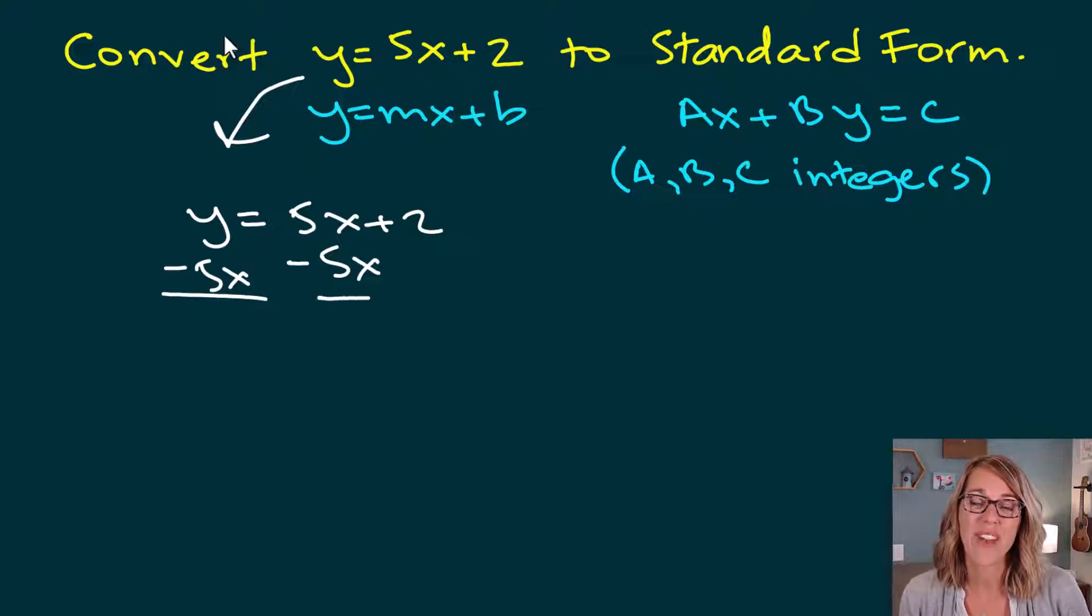I need the 5x to come first. I need my x terms and then my y terms. So I have negative 5x plus y is equal to, they cancel from this side, is equal to 2.